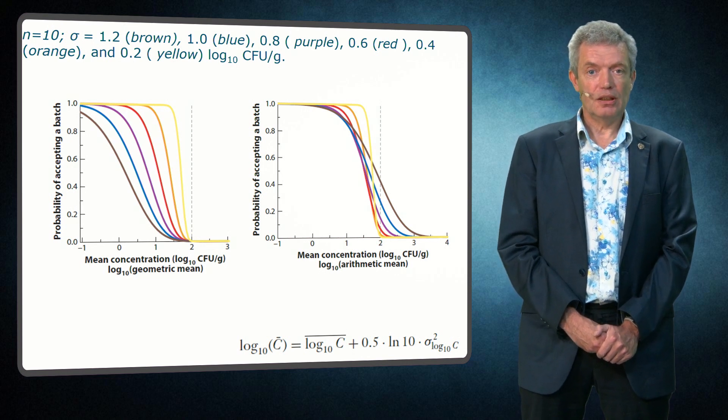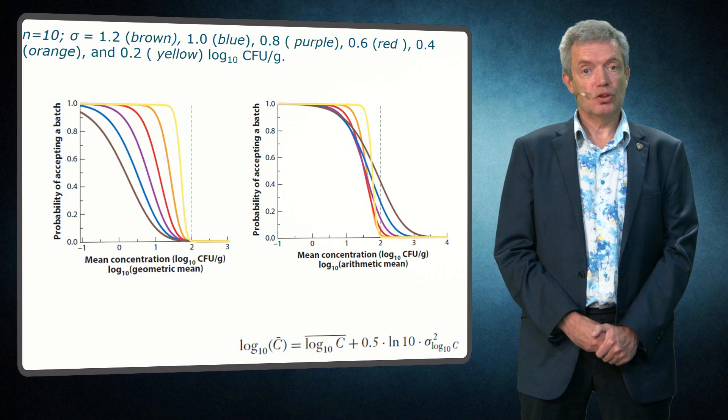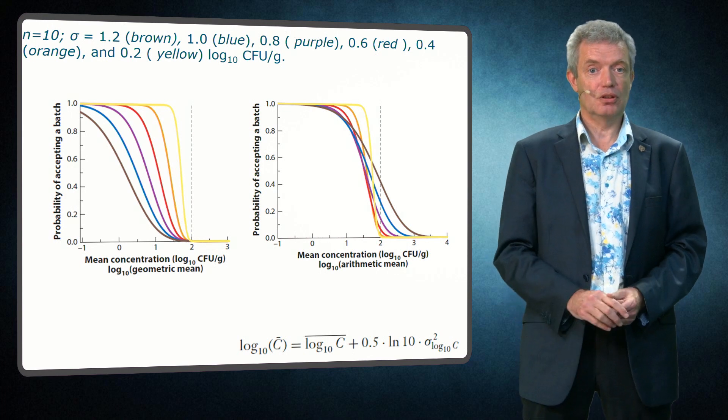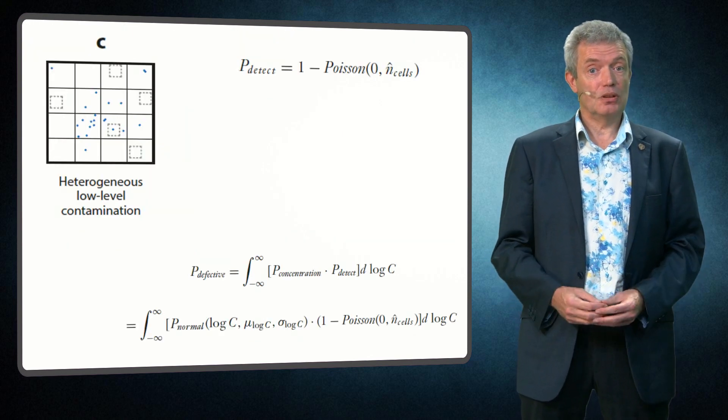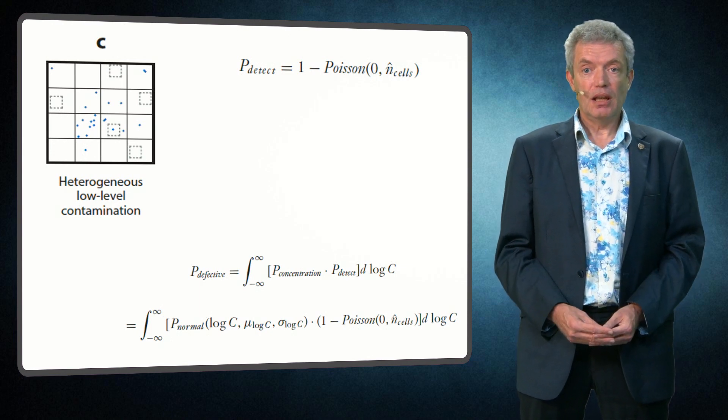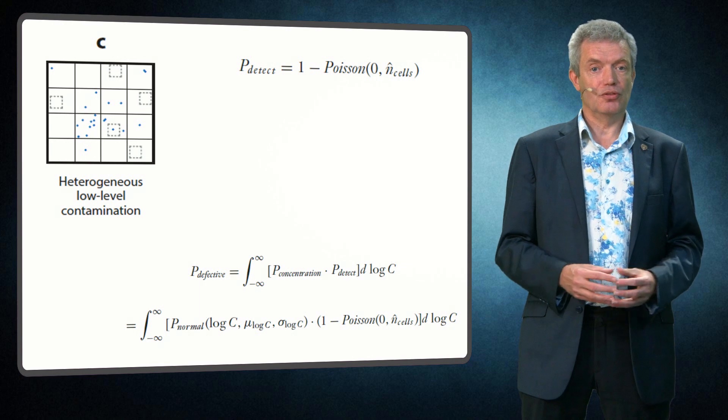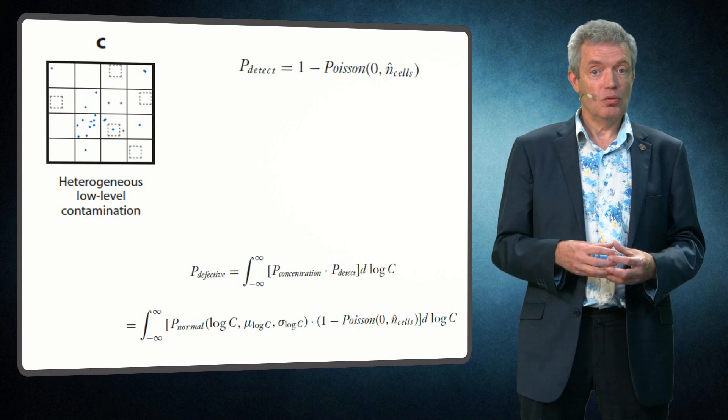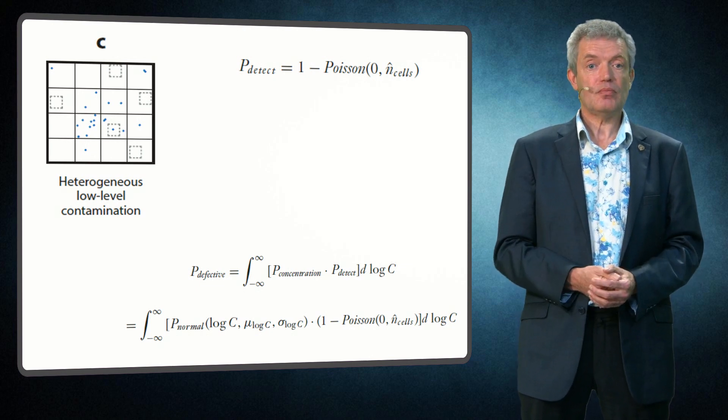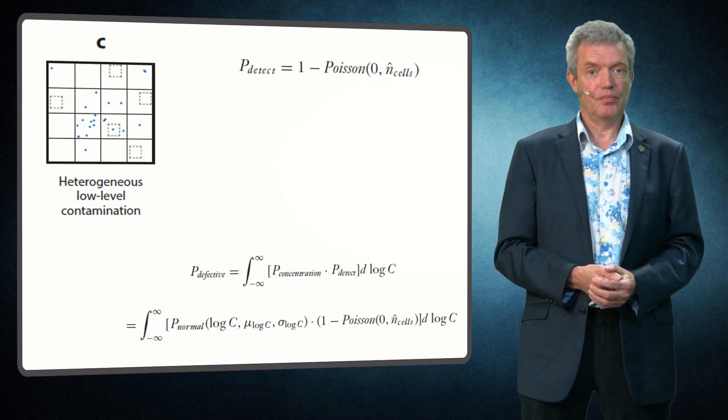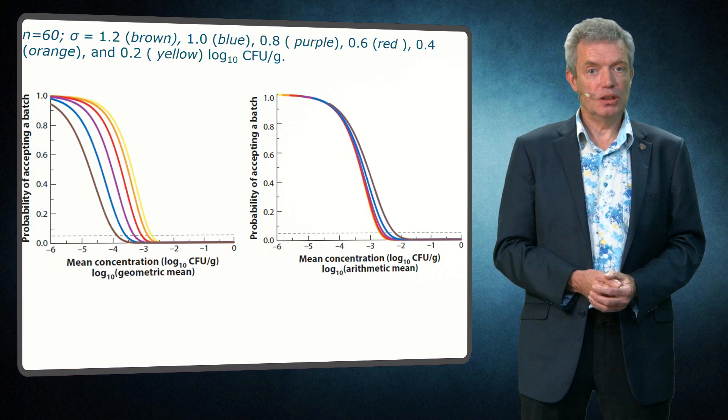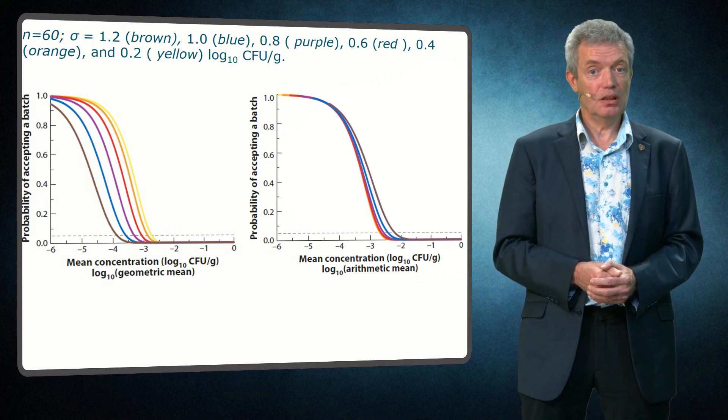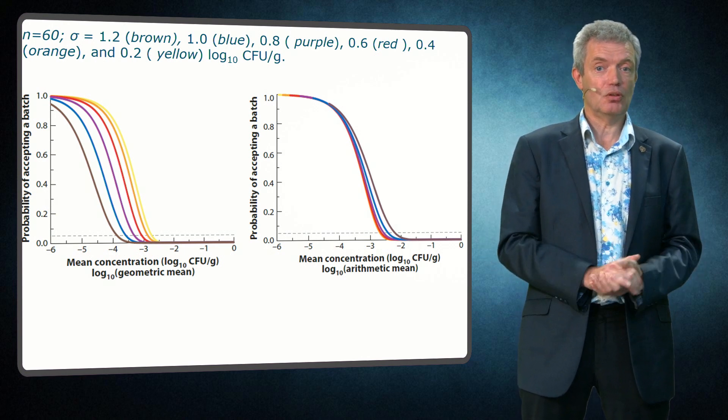These are all graphs for quantitative sampling plans. But let's look now also at sampling plans where the organisms are again not homogeneously distributed and are at very low levels, so that's situation C. This is relevant for presence-absence testing for Salmonella or Cronobacter. Here we must consider not only the distribution of the organism, which is log normal, but also the probability that given a certain concentration of the pathogen, there is actually one organism present in the sample unit. And this last part is a Poisson process. In that case we can again calculate the OC curve for various batches with varying spread of the contamination and we see that the performance on the arithmetic scale is even closer for the various standard deviations than for the quantitative case.